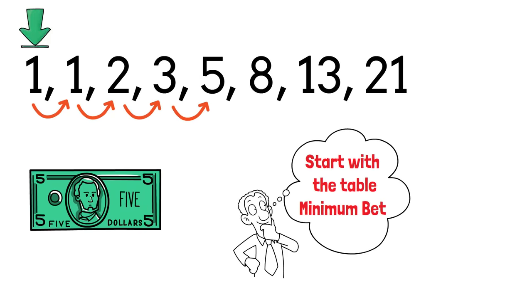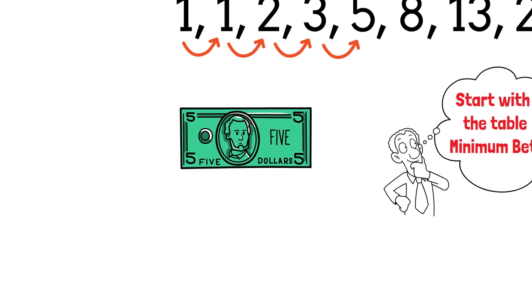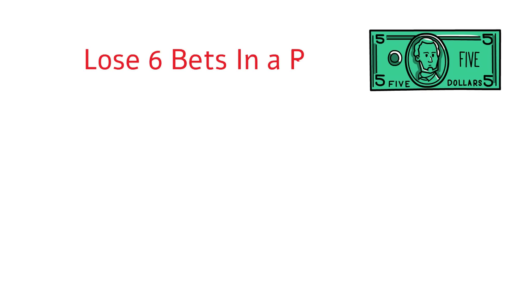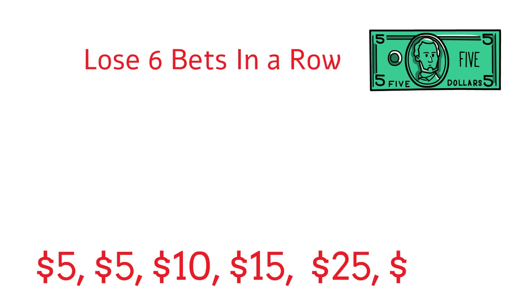Continuing with our $5 minimum bet amount, here's what the Fibonacci system would look like in real money terms if we were to hit a losing streak of six bets in a row: $5, $5, $10, $15, $25, $40.